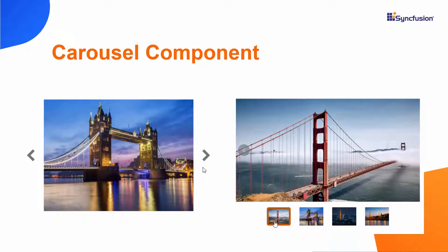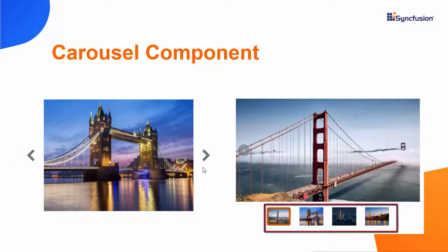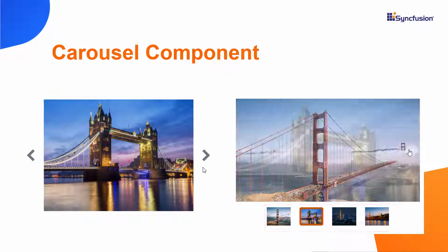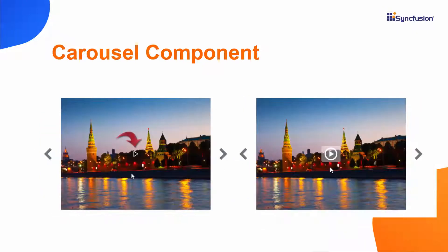Look at this Blazor Carousel example — the previous and next navigators are shown in different colors, and the indicators are displayed with slide images. Also, the play button is added and customized. Now I will show you the code to achieve this customization using an existing Blazor application.